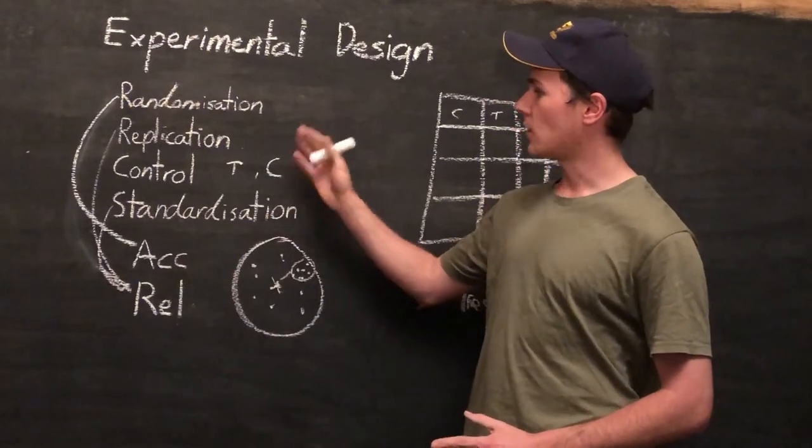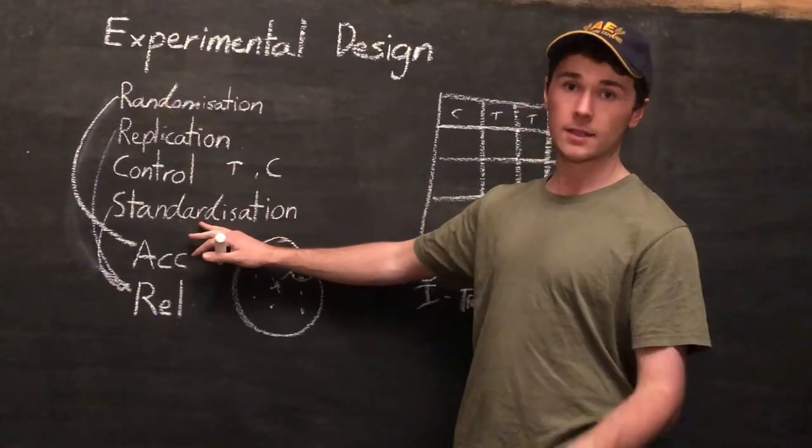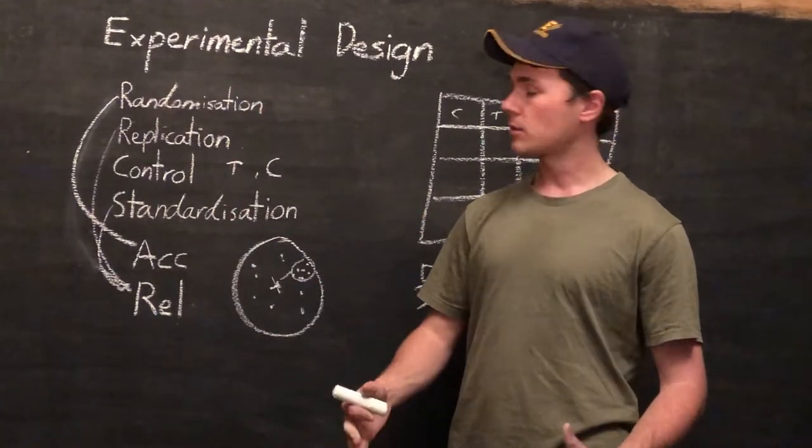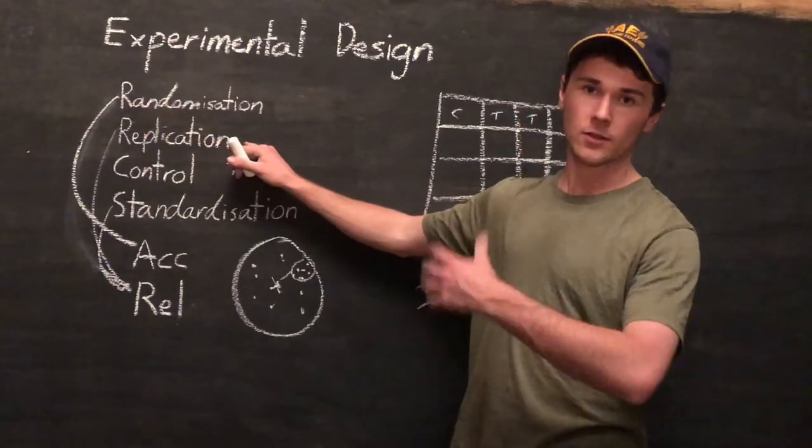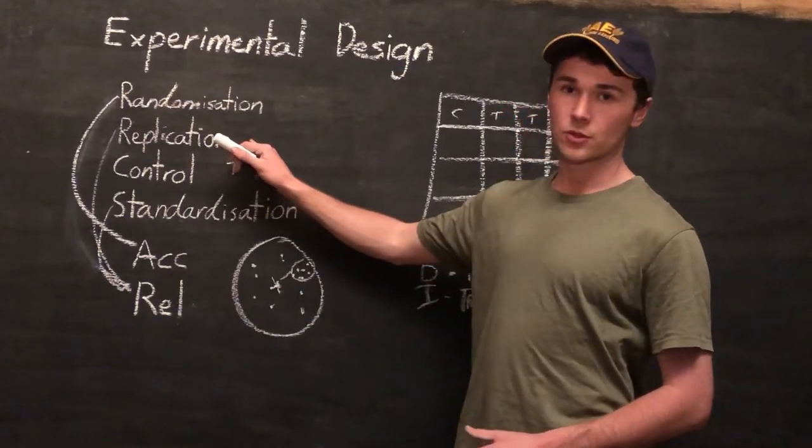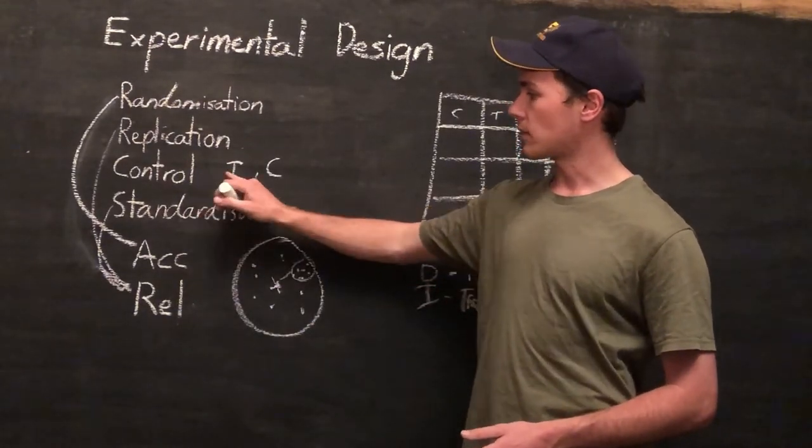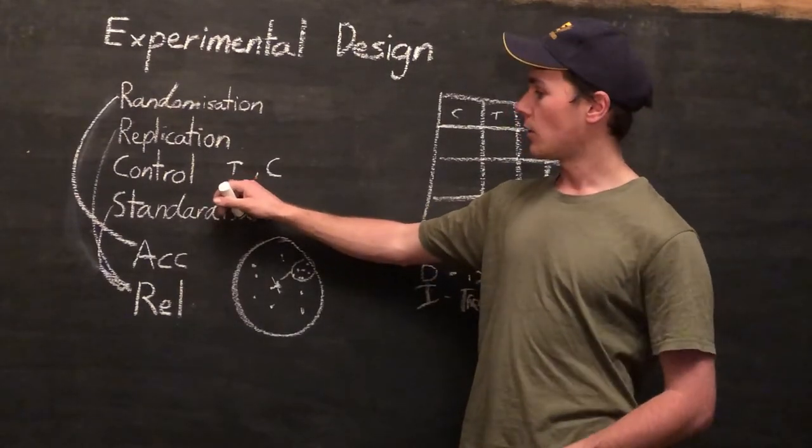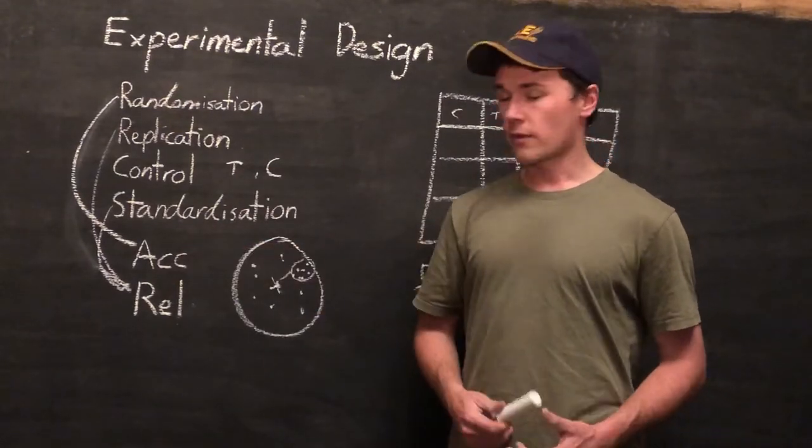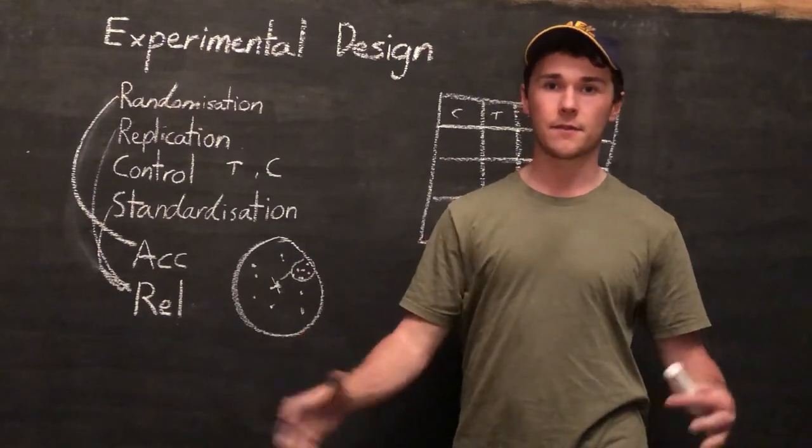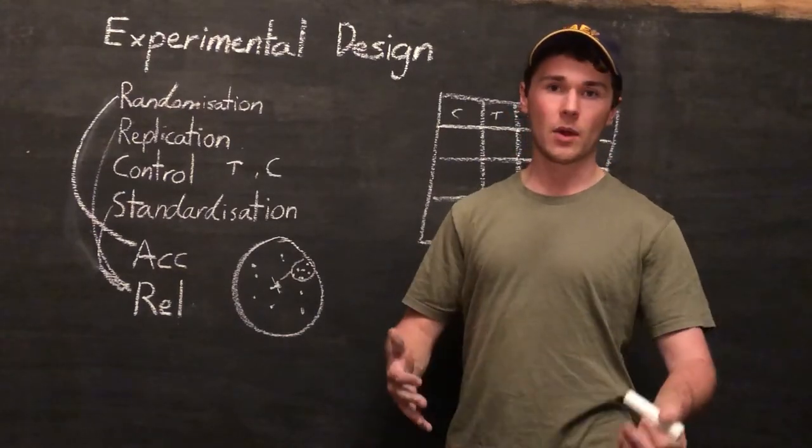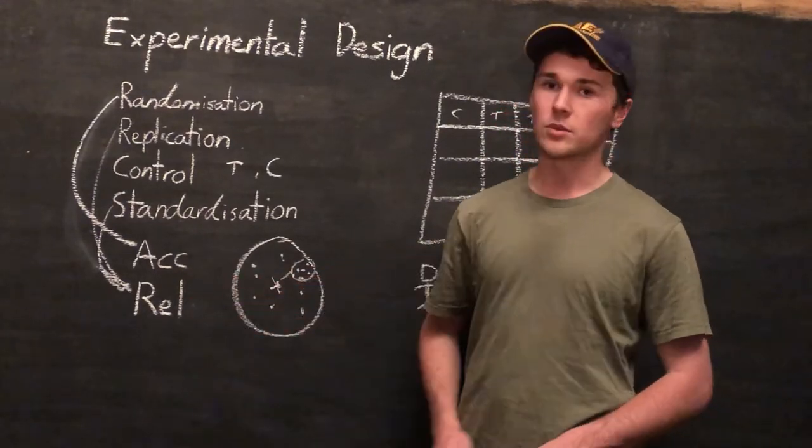There we go. That is experimental design. And the four things we need when making a design. We need randomization to make sure that there's no bias in our selection process. Replication, making sure that we've got heaps of data points to use. And then we can average them out to reduce random errors. Our control, which allows us to compare our actual results or the effect on the baseline effect. And standardization of variables to prevent external things affecting our results that we don't want. We've got to make sure we have all of these in our experiments to make sure that we get both accurate and reliable results.